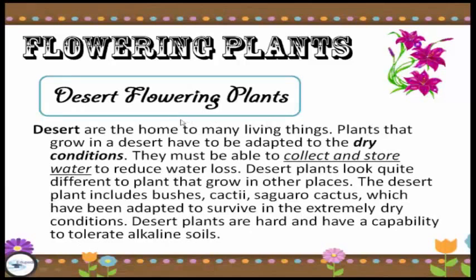One kind of flowering plants is the desert flowering plants. Deserts are the home to many living things. Plants that grow in the desert have to be adapted to dry conditions — they must be able to collect and store more water to reduce water loss. Desert plants look quite different from plants that grow in other places. Desert plants include bushes, cacti and the saguaro cactus, which have adapted to survive in extremely dry conditions. Desert plants are hardy and have the capability to tolerate alkaline soils.